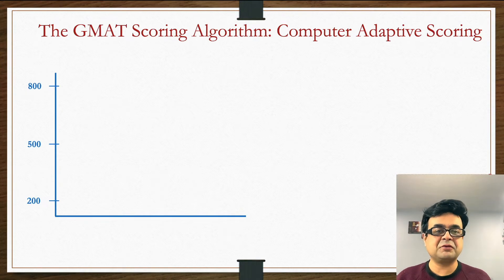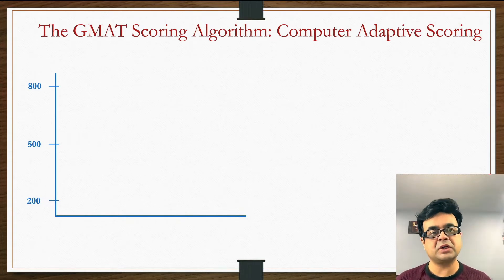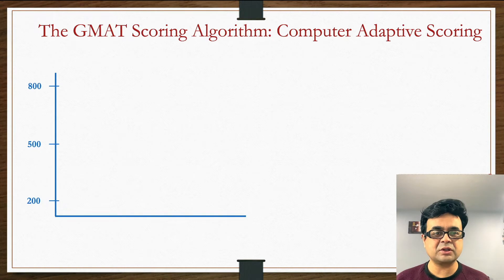If somebody has been telling you that the first 10 questions are more important in the test than the rest of the questions, they are alluding to this thing called computer adaptive scoring in GMAT. Today we're going to talk about what it looks like and how the algorithm works.